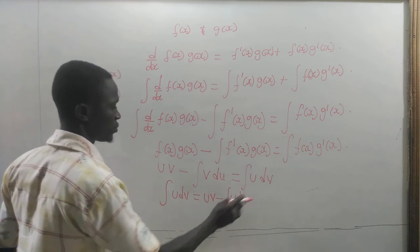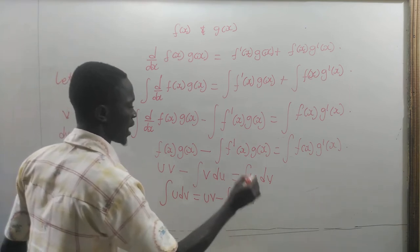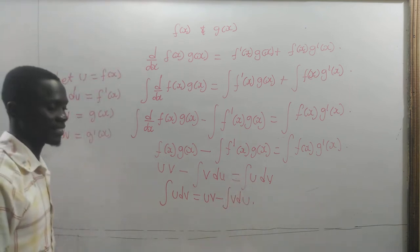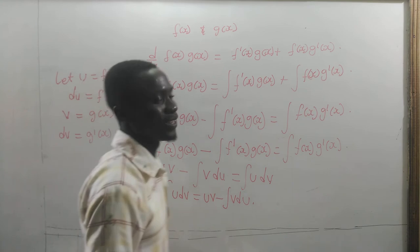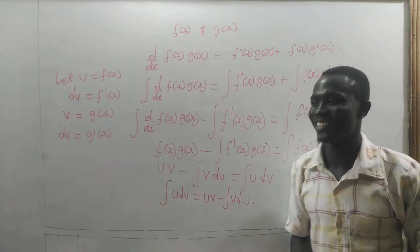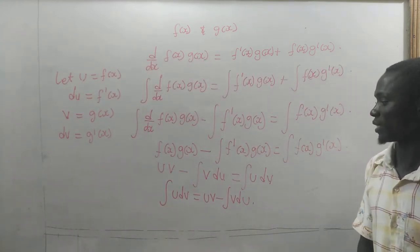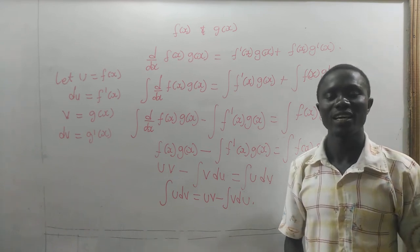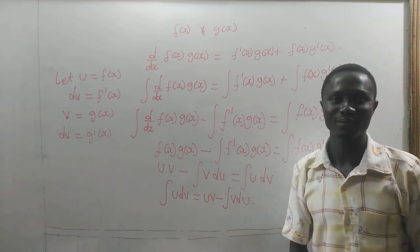The integral of u dv equals u times v minus the integral of v du. Thank you for watching. Please subscribe to my channel, like, share, and comment. Bye-bye.